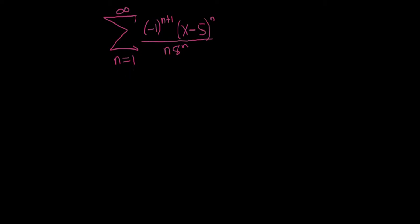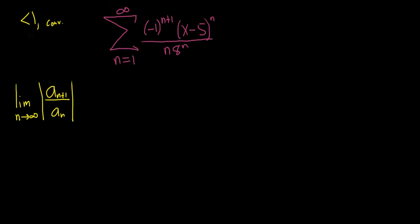In this problem we have to find the interval of convergence for this power series. We'll start by using the ratio test. The ratio test says: if you take the limit as n approaches infinity of the absolute value of a_(n+1) over a_n, one of three things can happen. If the limit is less than 1 you have convergence. If it's greater than 1 we get divergence. And if it's equal to 1 we have no information.